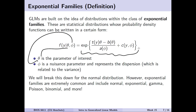Exponential families are very common and include things like the exponential distribution, gamma, Poisson, binomial, and much more. This makes them quite flexible and useful if we're actually trying to describe different types of data, model them, and find a common way of calculating things like our beta coefficients.